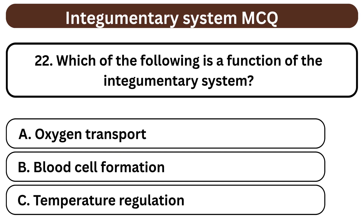Question 22. Which of the following is a function of the integumentary system? A. Oxygen transport. B. Blood cell formation. C. Temperature regulation. The answer is C. Temperature regulation.